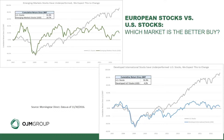Here's another view going back to 2007, showing how both developed international stocks — really European and Japanese stocks — as well as emerging market stocks have fared since the peak of the market in 2007. You can see pretty abysmal returns in both emerging and developed stock markets, whereas US stock markets have had a nice run since those peaks.